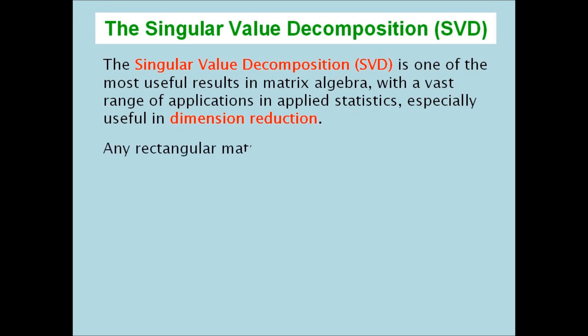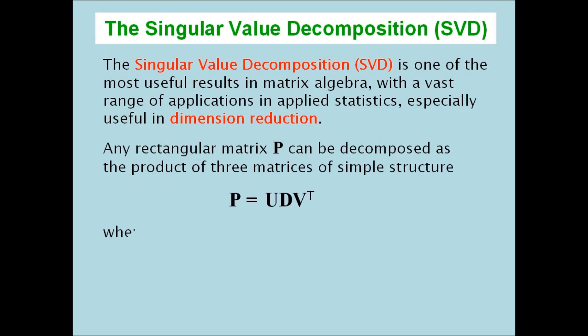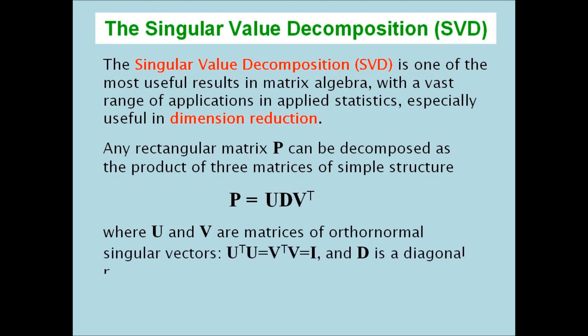Any rectangular matrix P can be decomposed as the product of three matrices of simple structure: U, D transpose V, where U and V are matrices of orthonormal singular vectors and D is a diagonal matrix of positive singular values in descending order.